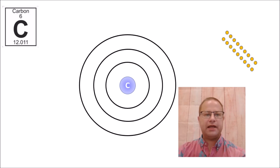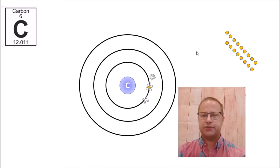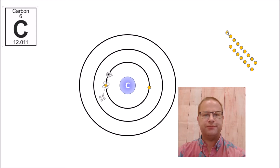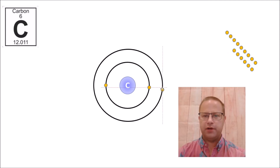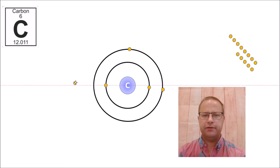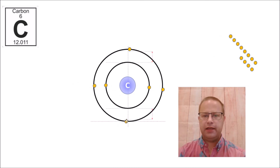Now let's take a look at carbon. Carbon has the atomic number of six, which means we have six electrons and six protons. We assign two electrons to go in the first shell. Six minus two is four, so we have four electrons going to the second shell — we still don't need a third shell. Adding them one, two, three, four — we have a total of six electrons.